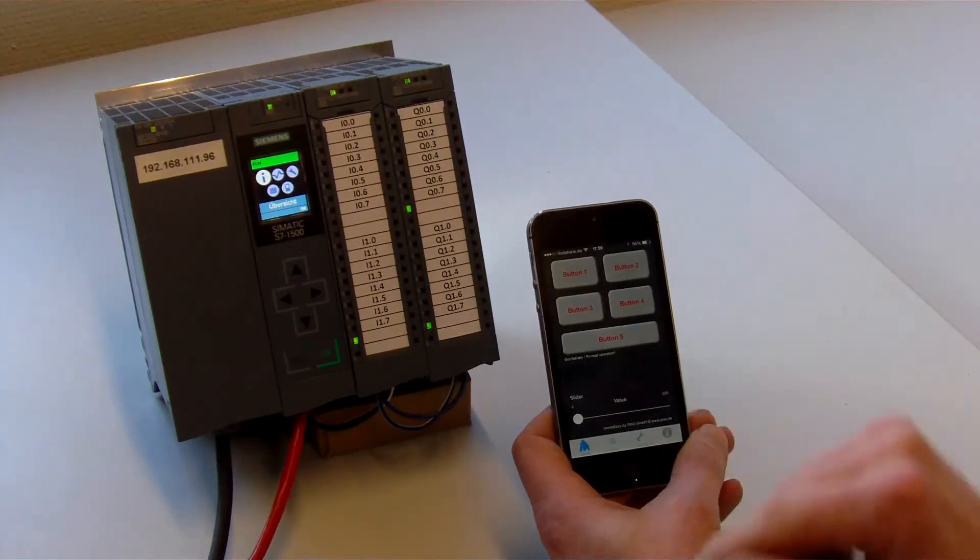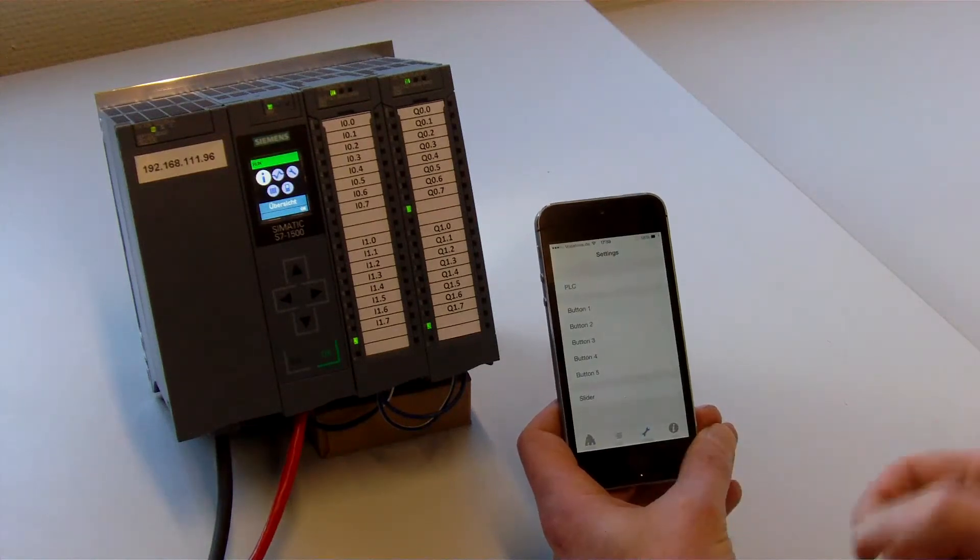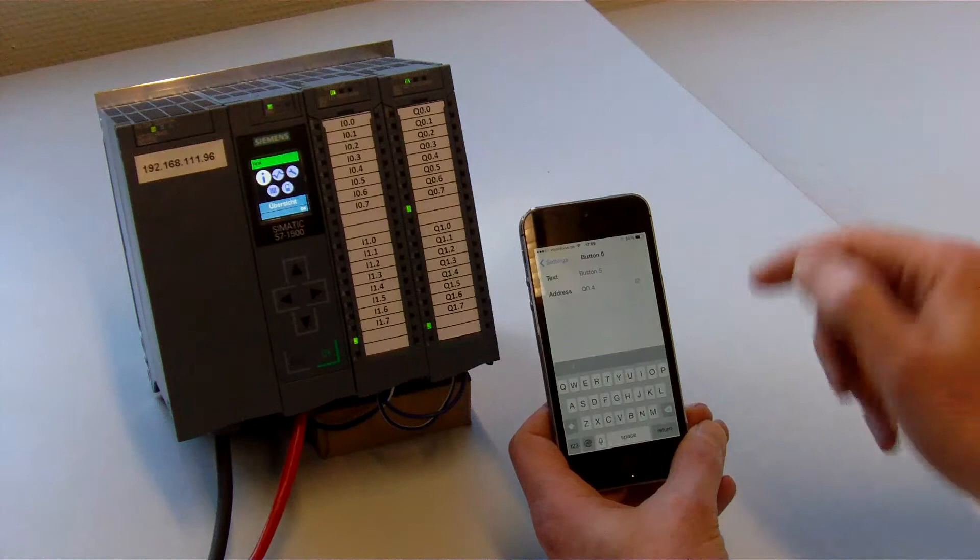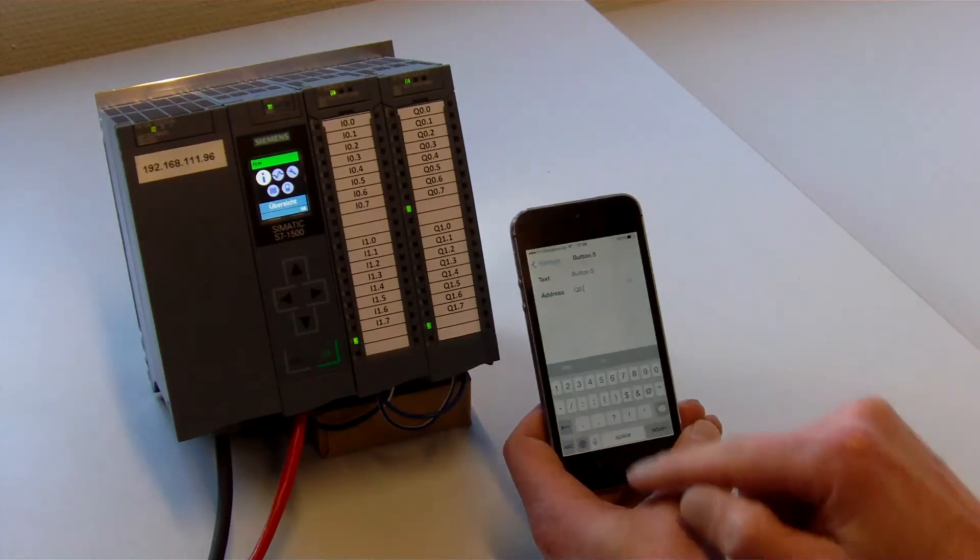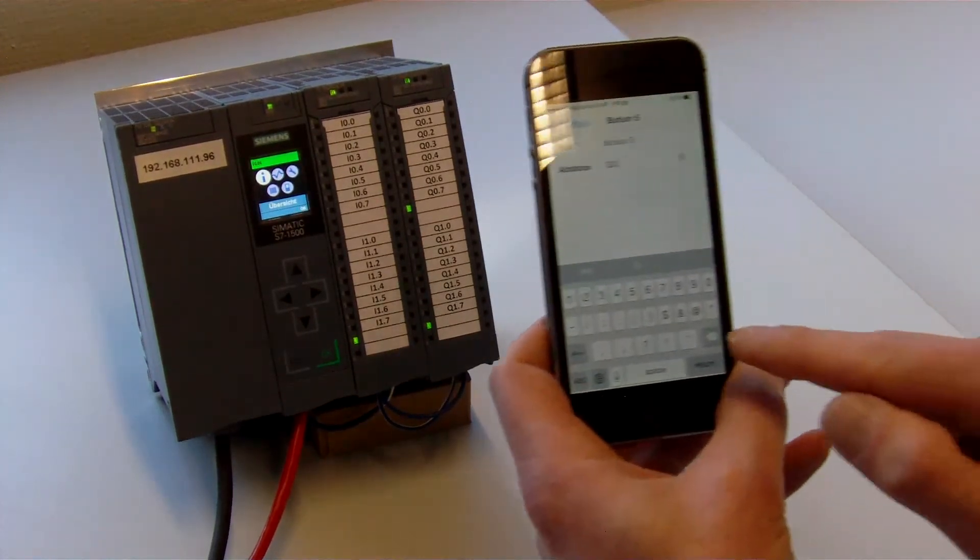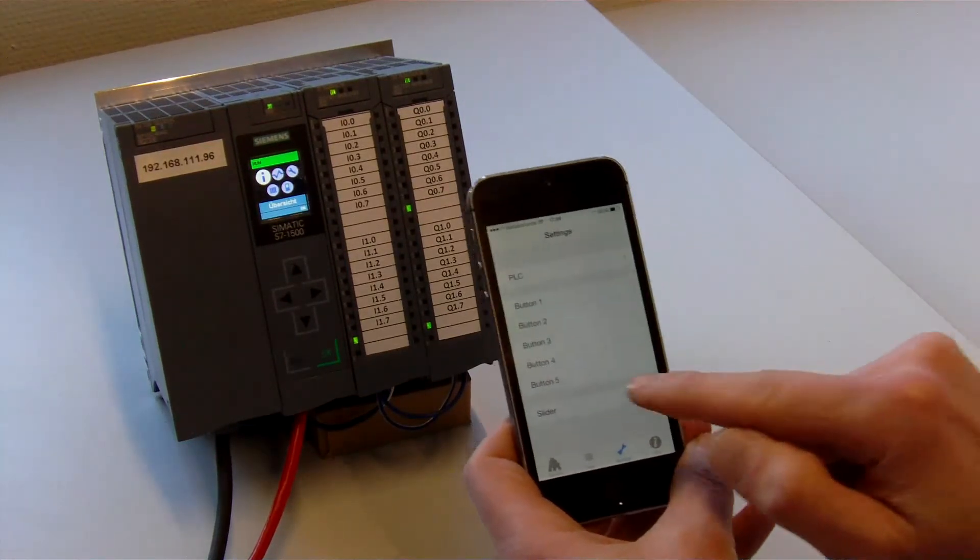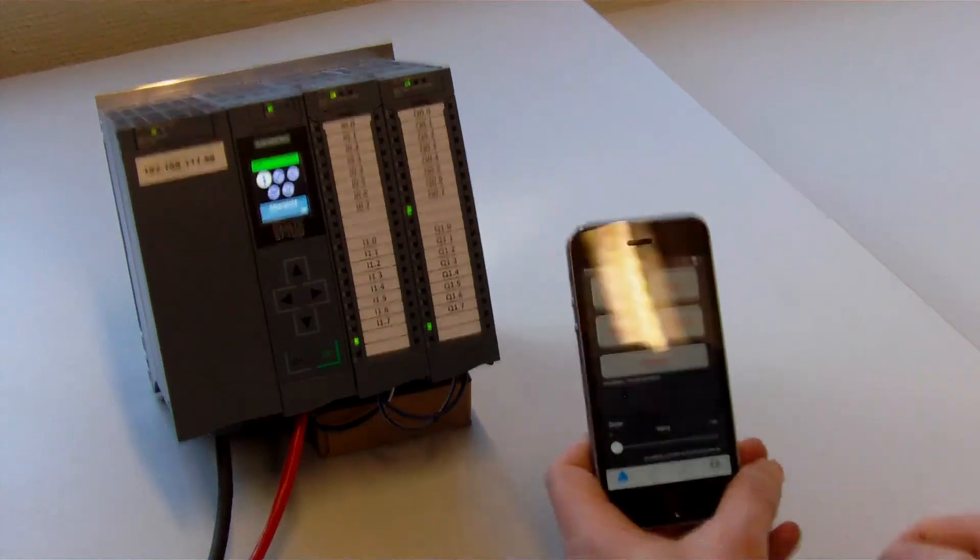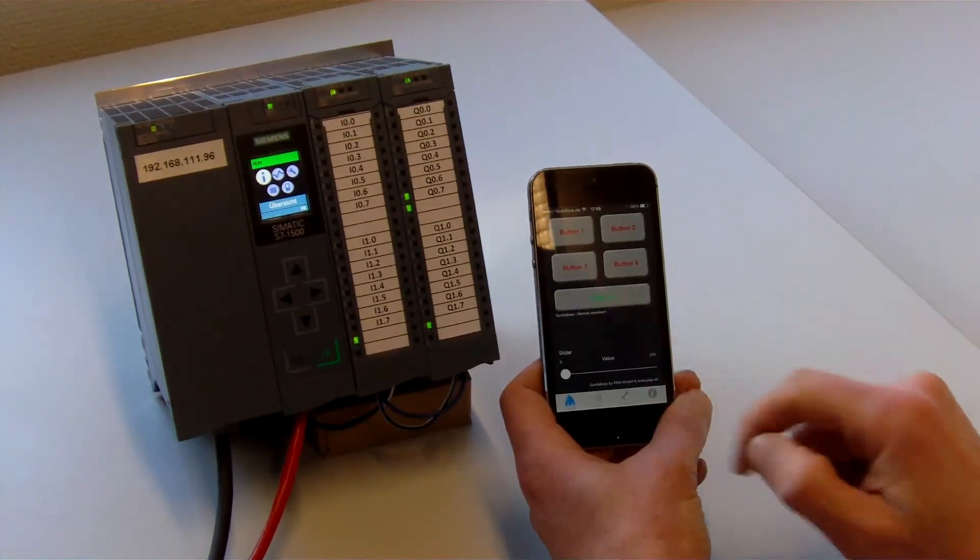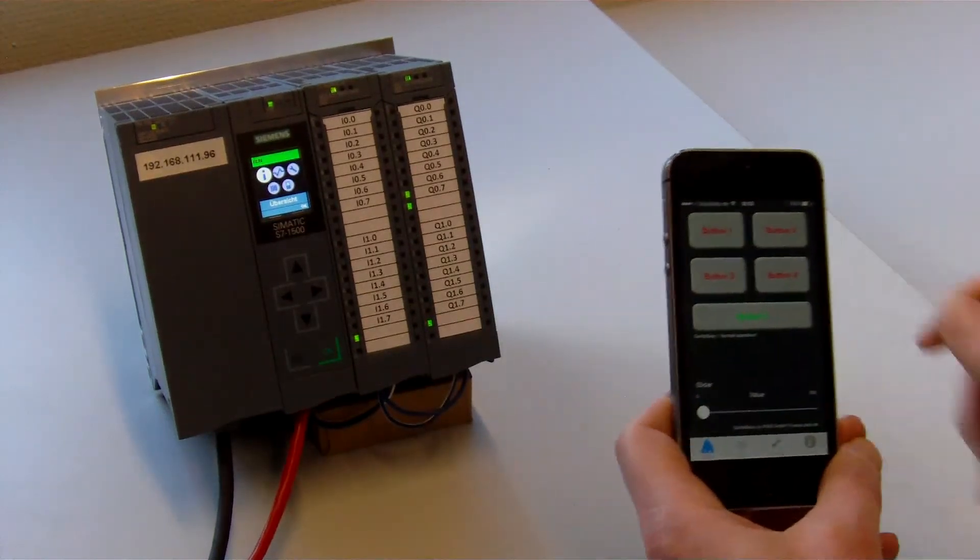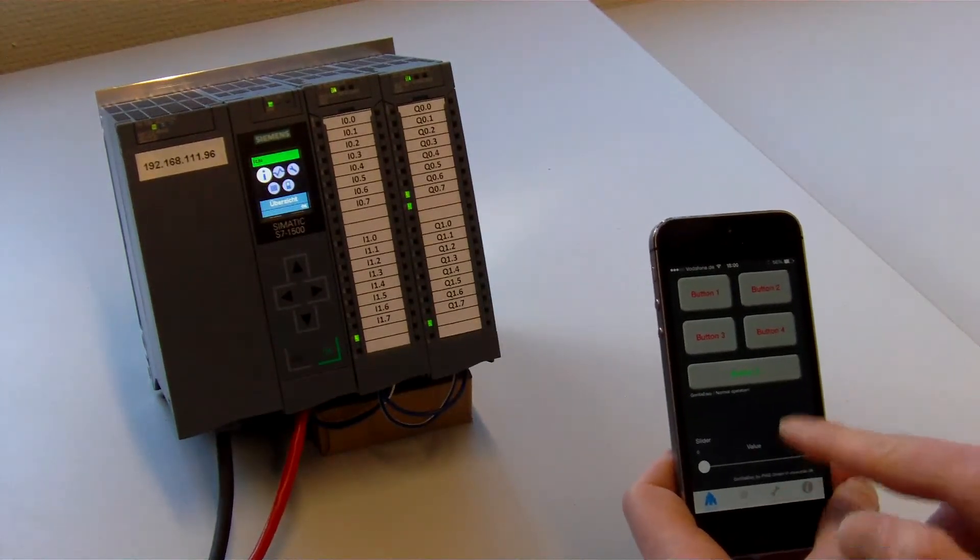And here we can change button 5 in the sections. And here we assign for example Q0.7. I hope you can see it. So, we reconfigure button 5. And when I press button 5 you see Q0.7 is set. Then we have the slider value.